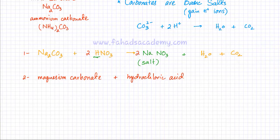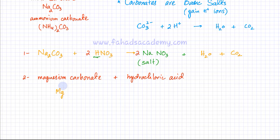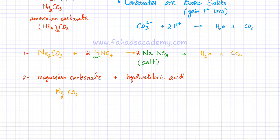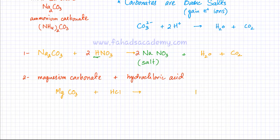Now for the second reaction — again a carbonate reacting with an acid, producing salt, water, and carbon dioxide. This time I have magnesium carbonate. Magnesium is Mg, in group 2, so it has a charge of 2+. Carbonate is CO₃ with a charge of 2−. The charges cancel out, so the formula of magnesium carbonate is MgCO₃. It's reacting with hydrochloric acid, HCl. The products will be salt, water, and carbon dioxide.